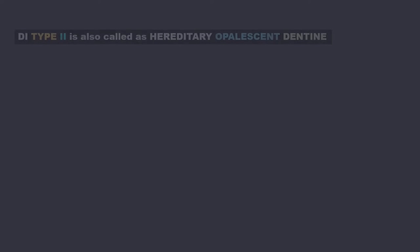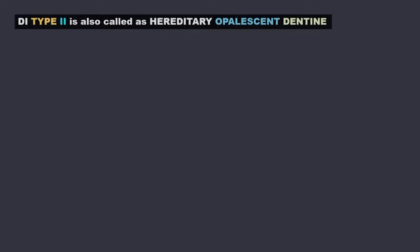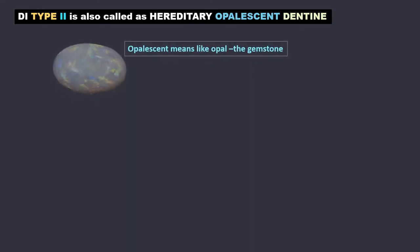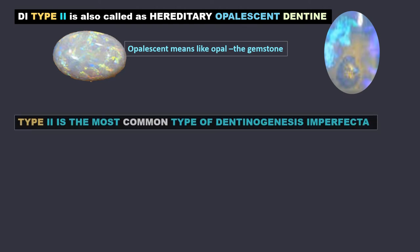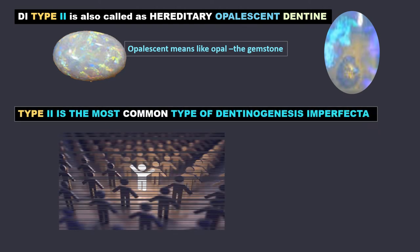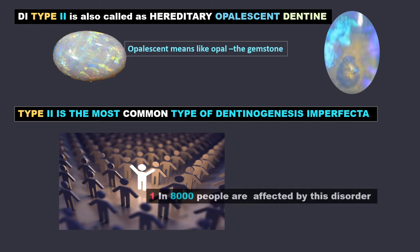DI type 2 is also called hereditary opalescent dentine. Opalescent means like opal, the gemstone. Opal gemstones have different colours, especially as irregular patches or streaks, and that's how the teeth look. It is the most common type of dentinogenesis imperfecta — one in 8,000 people are affected by DI type 2.